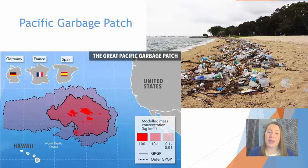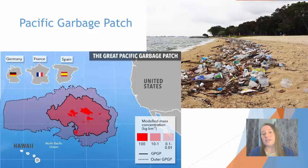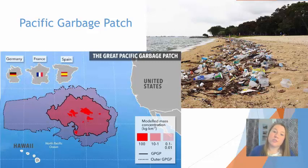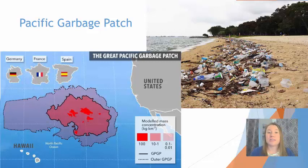The Pacific Garbage Patch is a collection of a lot of this plastic waste floating around in the Pacific Ocean. It collects due to ocean gyres, where ocean currents accumulate this material in one place. The Great Pacific Garbage Patch is not a big mound of garbage — it actually looks like a bunch of tiny plastic debris suspended together in a certain area. You could drive a boat over it and not initially realize you're in the garbage patch until you take a closer look at the water. This garbage patch is huge — larger than the countries of Germany, France, and Spain combined.